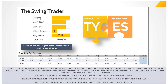When you put the Momentum TY and the Momentum ES together, you have the Swing Trader trading system — it trades two algos. It has very high returns compared to the other algo systems we offer. The bubbles here are only meant to represent the strengths relative to the other algos, not in some more general sense. The returns are higher on the Swing Trader than some of the other algos, and the drawdown is also decent.